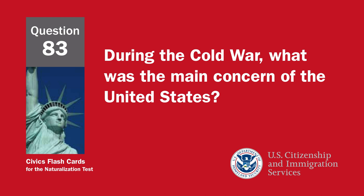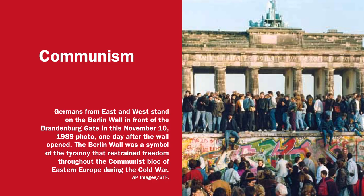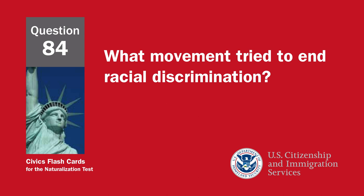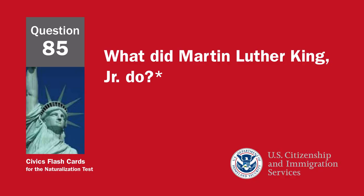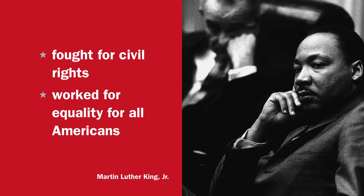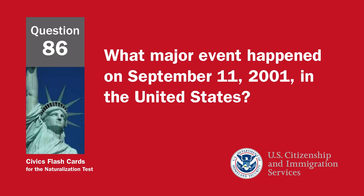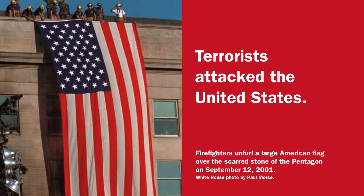During the Cold War, what was the main concern of the United States? Communism. What movement tried to end racial discrimination? The Civil Rights Movement. What did Martin Luther King Jr. do? Fought for civil rights and worked for equality for all Americans. What major event happened on September 11, 2001, in the United States? Terrorists attacked the United States.